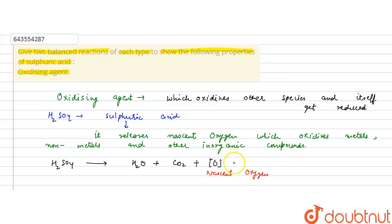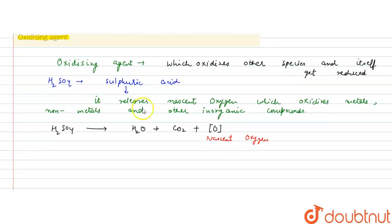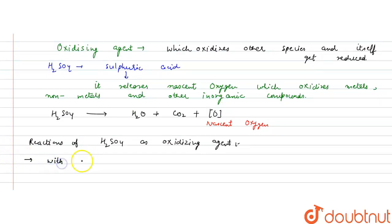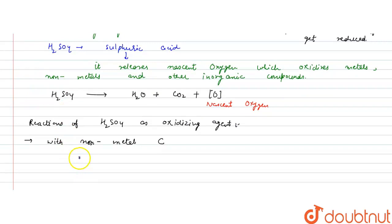This nascent oxygen is used to oxidize metals, non-metals, or other organic compounds. Writing down the reactions of H2SO4 as an oxidizing agent: when it reacts with carbon, a non-metal, the reaction is: C + H2SO4 → CO2 gas + H2O + SO2 gas.